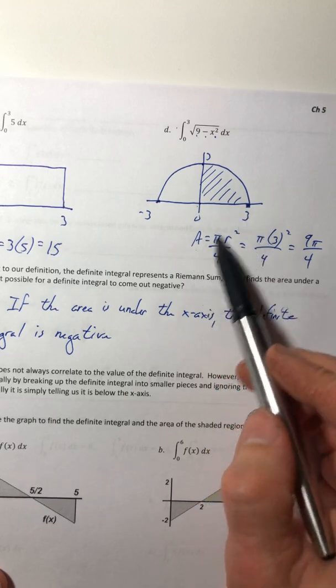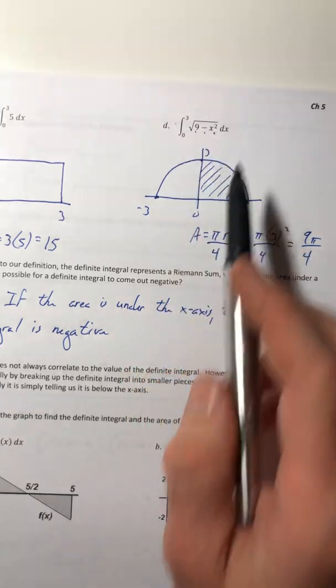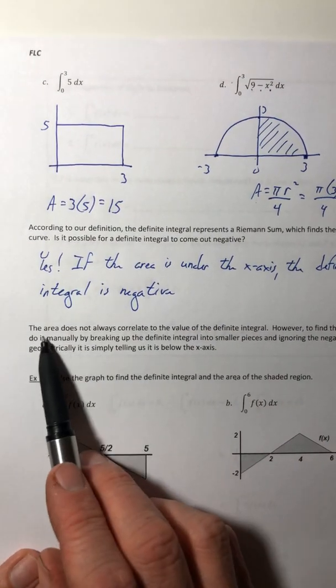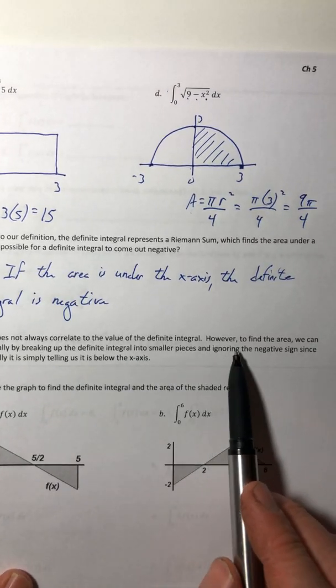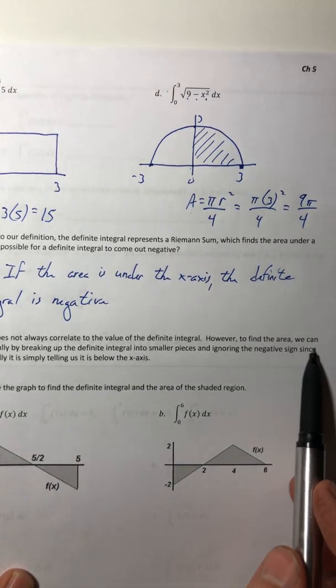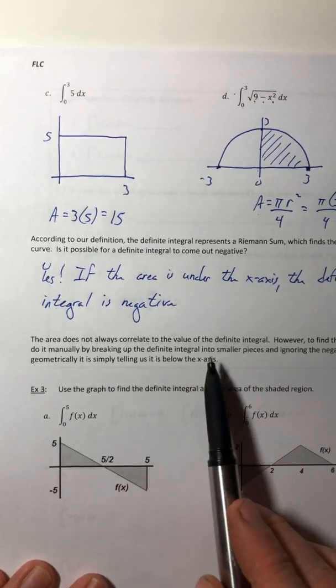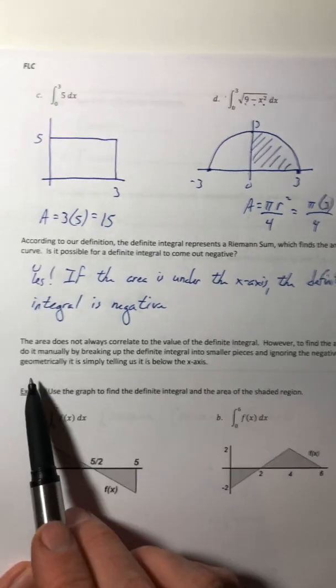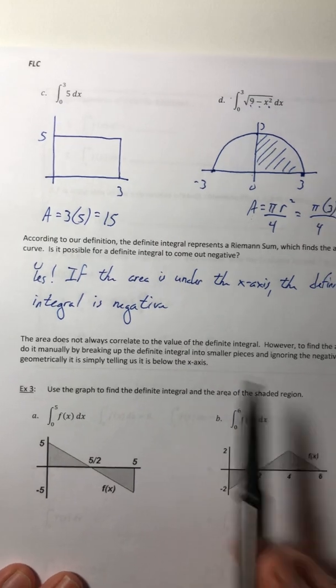then that definite integral would come out as a negative. So it gets a little tricky, because the area does not always correlate to the value of the definite integral. However, to find the area, we can do it manually by breaking up the definite integral into smaller pieces and ignoring the negative sign, since geometrically it is simply telling us it is below the x-axis.